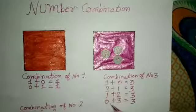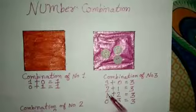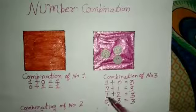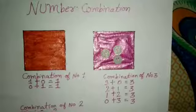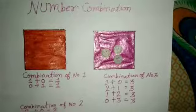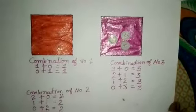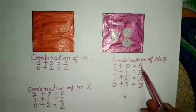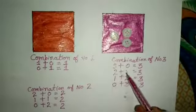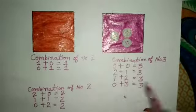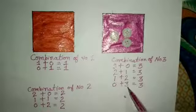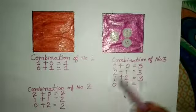Can you see? Yeh number combination hai. Jaise yahan pe backward counting bhi ban rahi hai: zero, one, two, three — aur yahan pe zero, one, two, three. Three plus zero, two plus one, one plus two, zero plus three — answer change nahi hoga. Yeh number combination isi ko kehte hain.